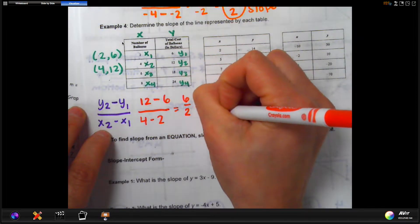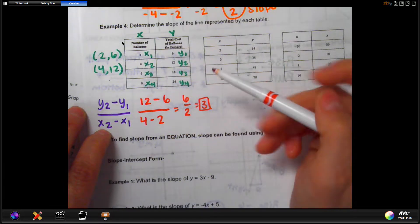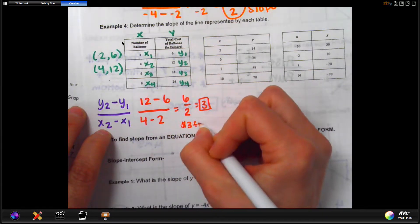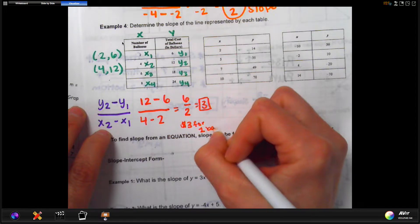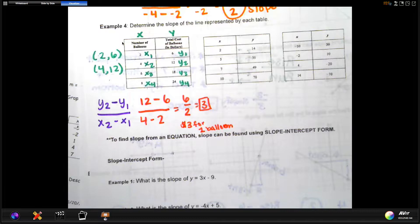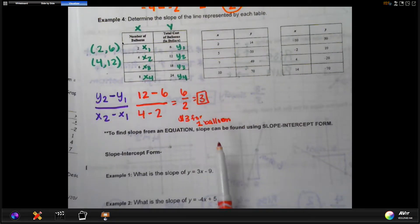So the slope of this table is 3. And what that's telling you is that it costs $3 for one balloon. And so that's what this slope is actually telling you in this situation. We're finding the cost for one. And you can figure that out. That's the reason you want to do the slope. Slope is actually a rate. And so if it's labeled, you can decide what it means in this situation.